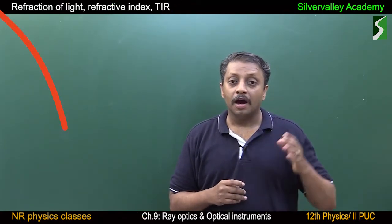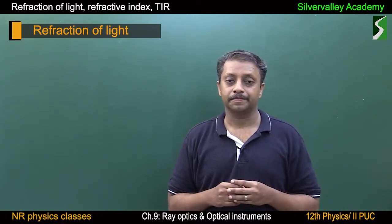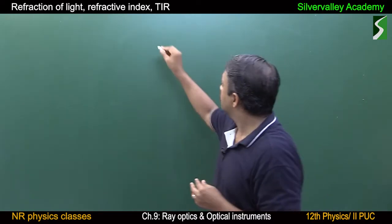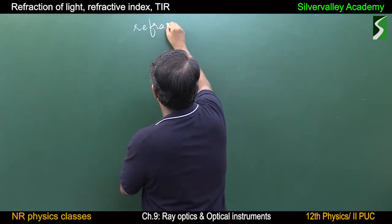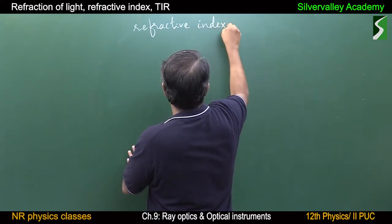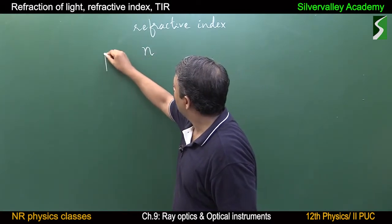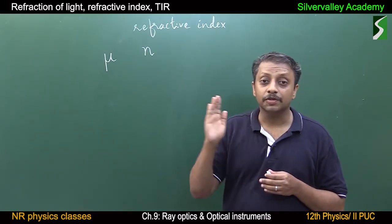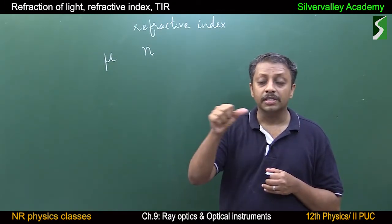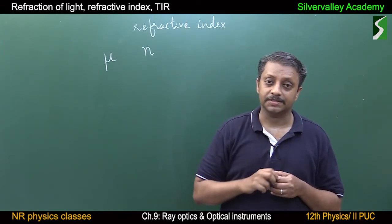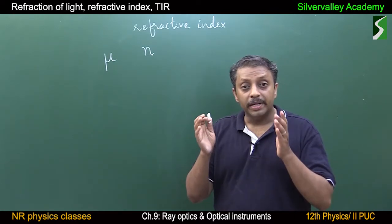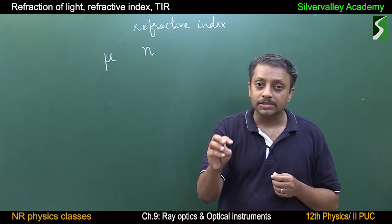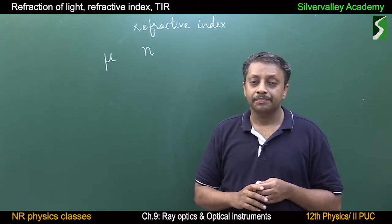Refraction of light. After learning reflection of light, now refraction. We'll cover basics of refraction, laws of refraction, then refractive index — denoted by n or mu. Students, give more attention to the basics of refraction and equations of refraction, including equations of refractive index in terms of wavelength, velocity, and absolute refractive indices. The only big difficulty in learning ray optics is managing the number of parameters. If you know how to manage these parameters, it is a very beautiful chapter.